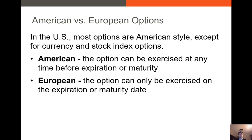Now I don't want to get it twisted — American options exist everywhere around the world, not just America. European options exist everywhere around the world, not just Europe. I don't know exactly why we call them American versus European options, but basically the big benefit of American options is you can exercise them before maturity.